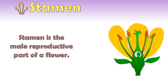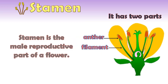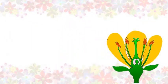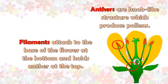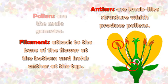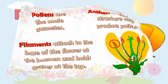Stamen is the male reproductive part of a flower. It has two parts: anther and filament. Filaments attach to the base of the flower at the bottom and hold the anther at the top. Anthers are knob-like structures which produce pollens. Pollens are the male gametes.